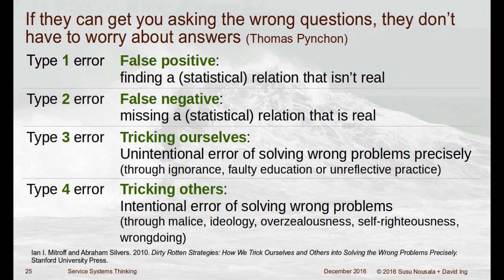How many people know about type one and type two errors from statistics? In statistics, you get a sample of data and say it represents the world. The example I use is drug testing. When you bring a new drug to market, you test it on populations of people. You're trying to make sure it works and doesn't harm people. The first type of error is a false positive — you say the drug works, but it actually doesn't. Even though during testing it appears to work, that's a false positive, which is a type one error.